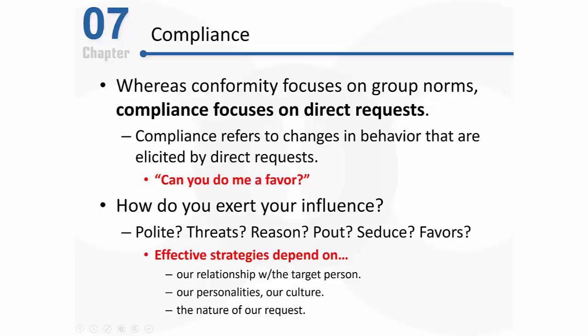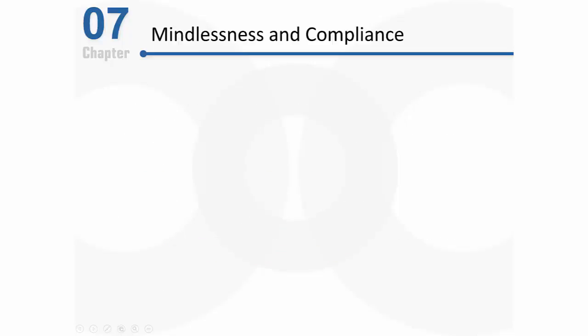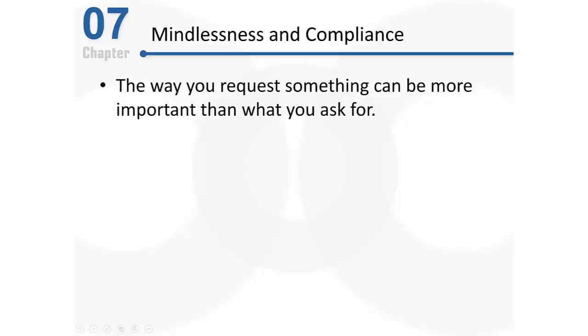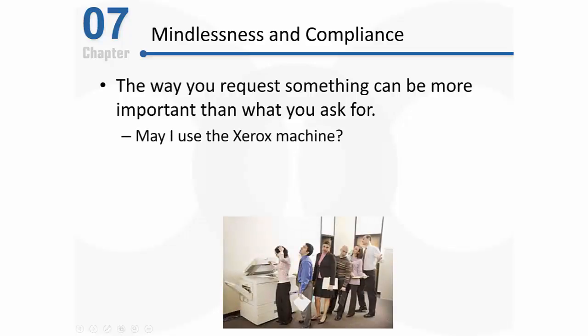So to gain somebody's compliance there are a variety of different strategies we can use, and the strategies we decide to use are dependent on a variety of different factors. Next, you're going to see that some people comply with our requests almost automatically. Why would people comply automatically? That's where the topic of mindlessness enters this conversation. The bottom line is that we don't always process information very carefully. Researchers have found that the way you actually ask for something can be more important than what you actually ask for.